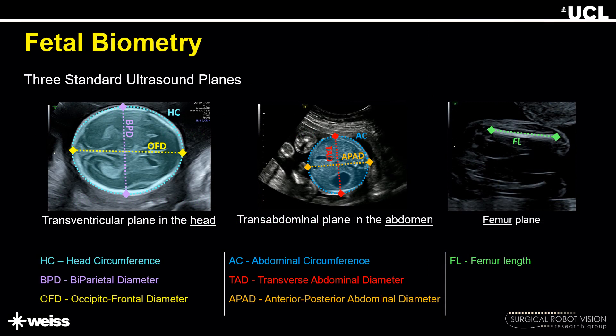The three standard ultrasound planes used for fetal biometry are the transventricular plane in the head, the transabdominal plane in the abdomen, and the femur plane. For simplicity, I will refer to these as the head, abdomen, and femur planes in the following slides.